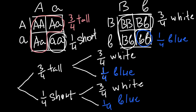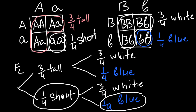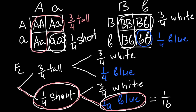The question asks us to find the probability of plants being short and bearing blue flowers in the F2 generation. We follow that path on the forked line and connect these two independent events. Because they are independent probabilities, we multiply them: one-quarter times one-quarter. The answer is that this phenotype would be seen in one-sixteenth of all the plants.